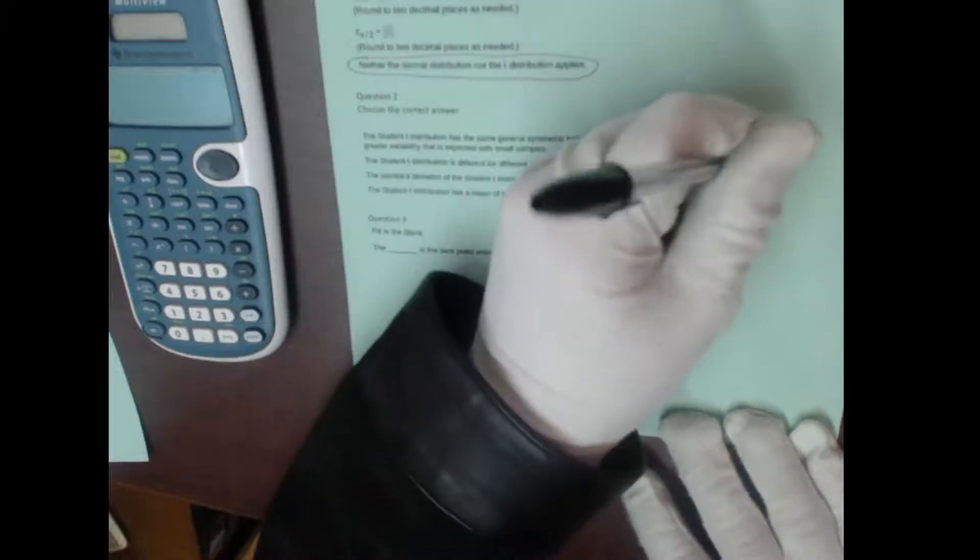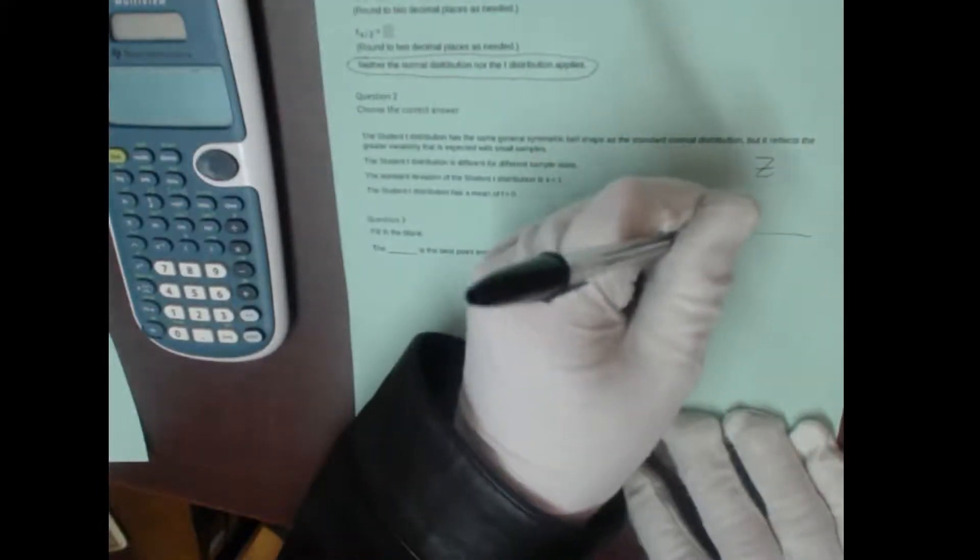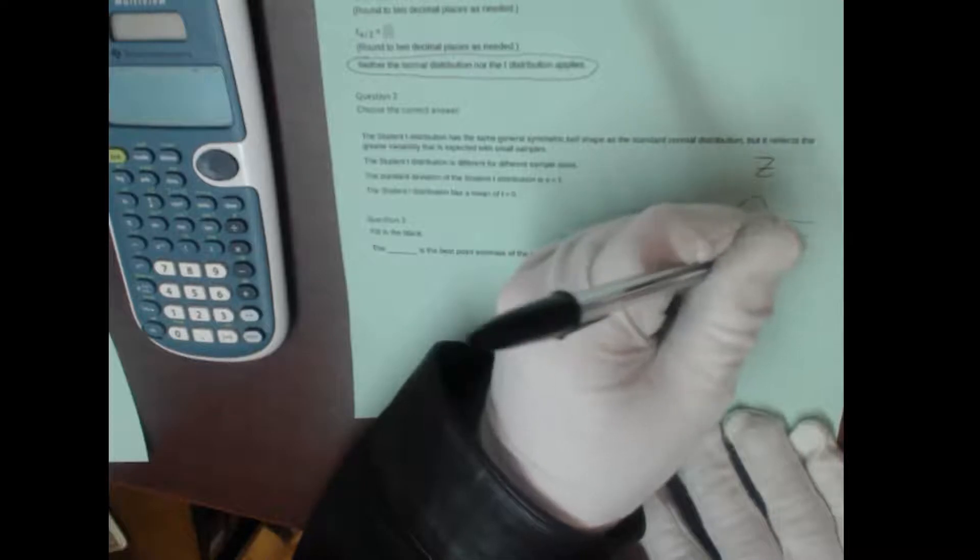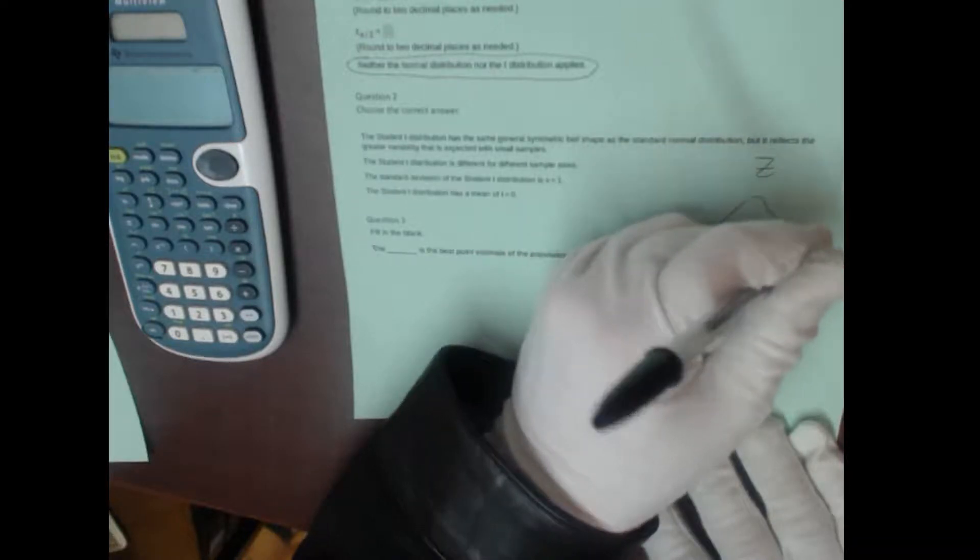Let's talk about the t-distribution a little bit more. You'll remember that for z, we have this beautiful bell curve where 0 was in the middle and the standard deviation was 1.